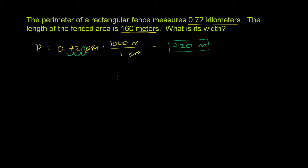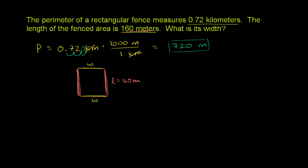Now let's remind ourselves what the perimeter even is, and then hopefully we can figure out the width. Let me draw a little box over here. They tell us that the length is 160 meters — so that's this dimension right over here, and also the opposite side. It's a rectangle, so these sides are both the same length. Our width is what we need to solve for — that's this side and the opposite side.